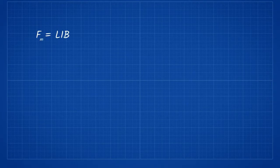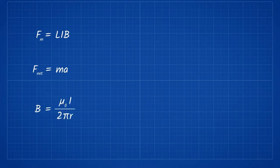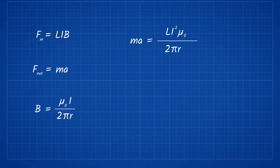Let's take a look at the requirements to create a railgun that can fire at Mach 12 using the previously mentioned Fm equals LIB formula and Fnet equals Ma. Putting them together and subbing in a formula to calculate the magnetic field, we get something that looks like this.